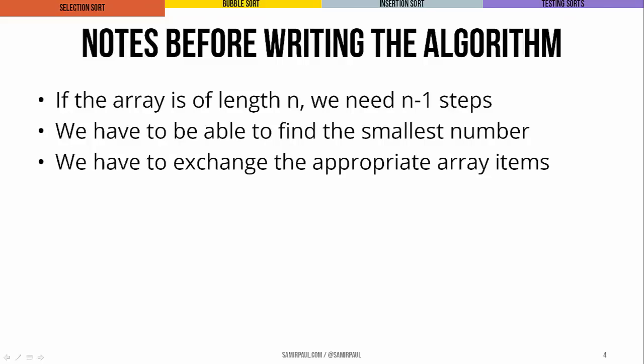Before we implement the algorithm, there are a couple of things to note. First, if the array is of length n, we only need n minus 1 steps. We'll definitely need to find the smallest number in the array and do some swapping of elements. It's also worth noting that when we write the code for this sort, we're going to use strict inequality — less than rather than less than or equal to — whenever we're looking for the smallest remaining value. So if two values are equal, we only count pure less than.